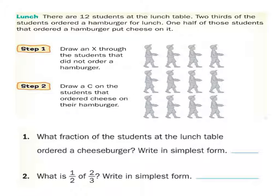There are 12 students at the lunch table. Two-thirds of those students got hamburgers. If we look at this, let's look at these in terms of columns, like this one right here. Now we're looking at three students. And it says two-thirds of them got hamburgers.